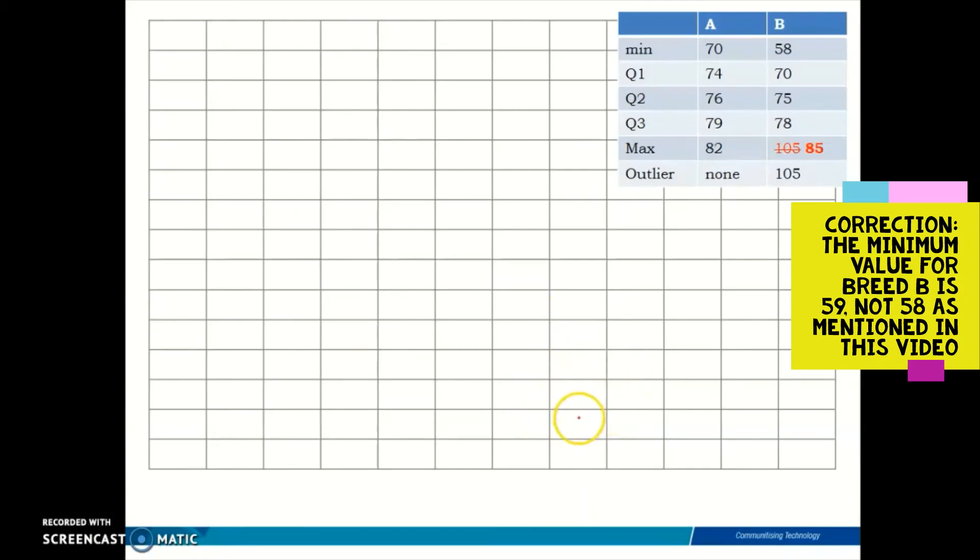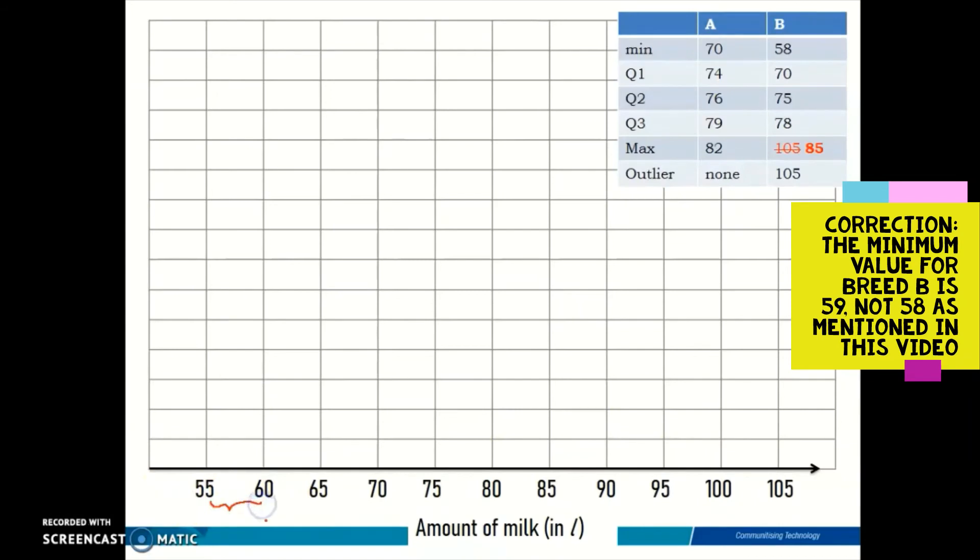Let's scale the x-axis. By looking at the table, I need to make sure that my x-axis contains the value 58 and extends up to 105. This is how the x-axis is going to look like. This is properly scaled, meaning each box represents five numbers, like from 55 to 60, from 60 to 65.